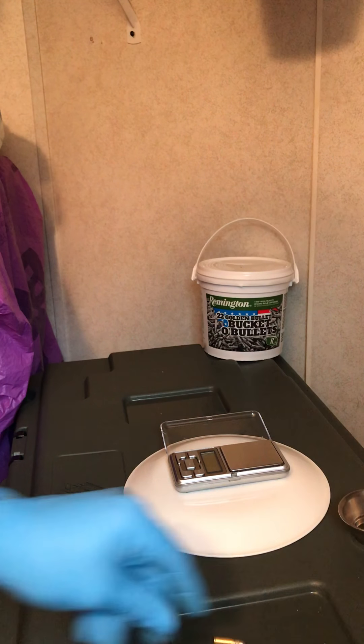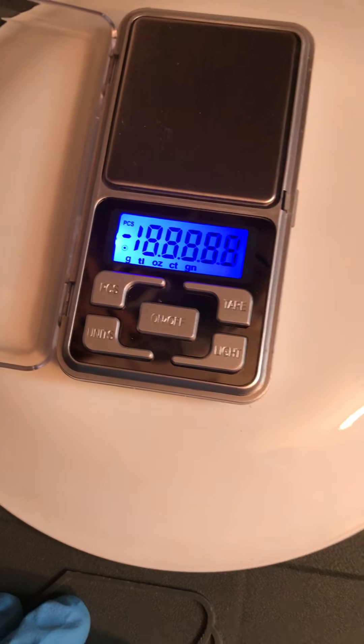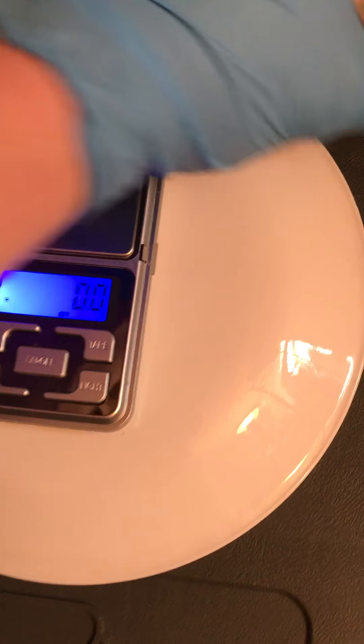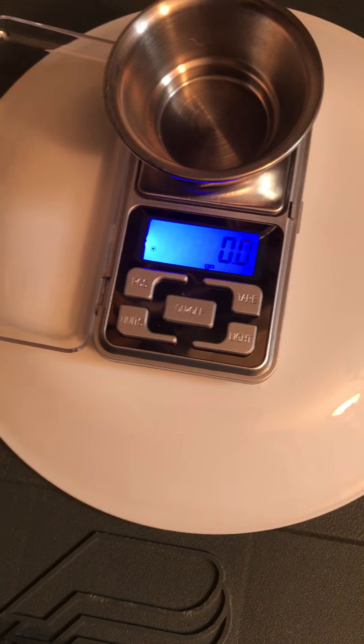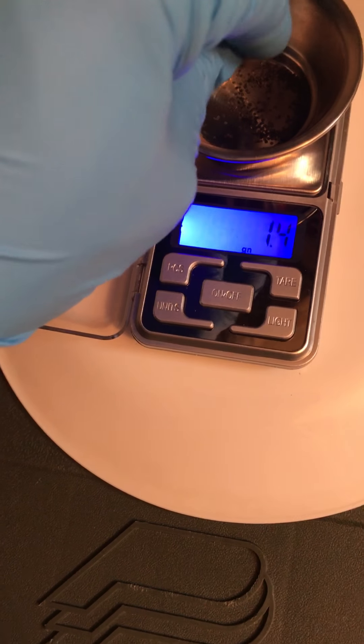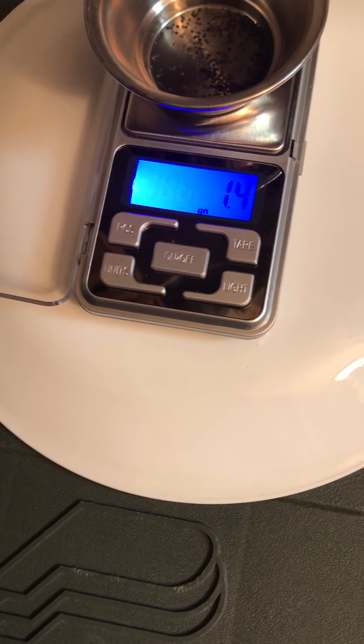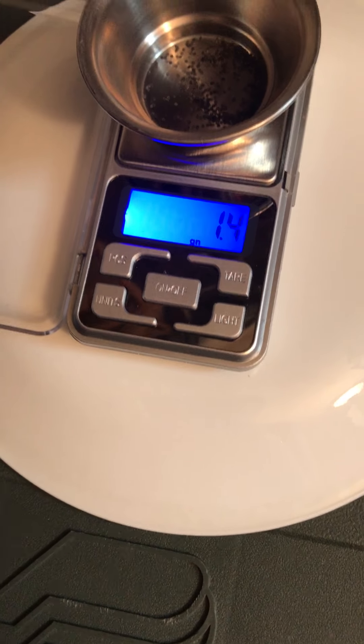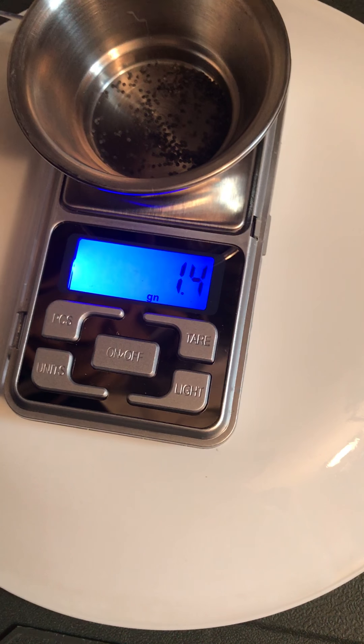Let's go ahead and pull one of these bullets and weigh the powder in the bullet. Here's a scale specifically made for weighing powder. It's already set for grains. Let's put our little thing on here, tare it out twice just to make sure. Here's the case - let's pour the powder in. The powder looks like 1.4 grains. I did not lose any of the powder at all out of this one. Powder's 1.4 grains.